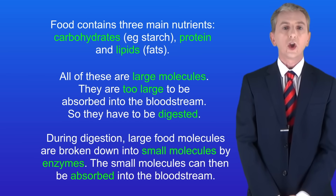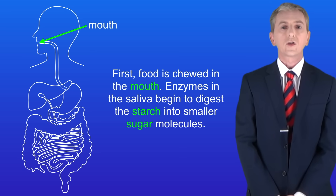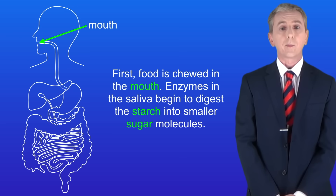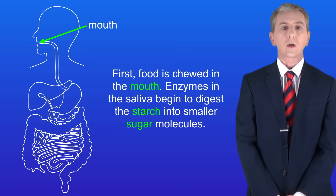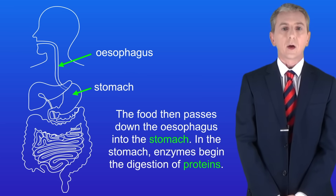I'm showing you a picture of the human digestive system here. I'm going to give you an overview of the main functions of the different organs, and we'll be looking at some of them in more detail in later videos. First, food is chewed in the mouth, where enzymes in the saliva begin to digest starch into smaller sugar molecules. The food then passes down the esophagus into the stomach.